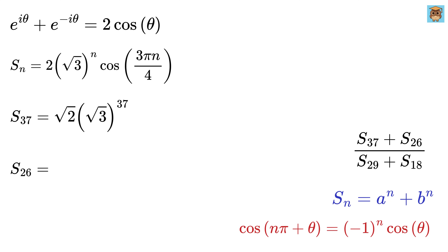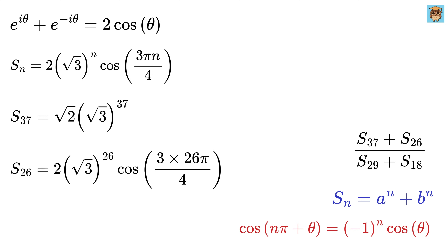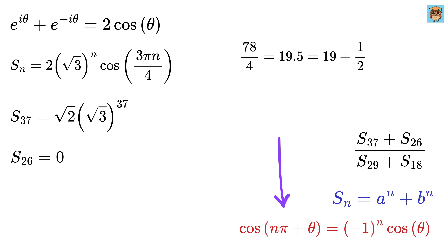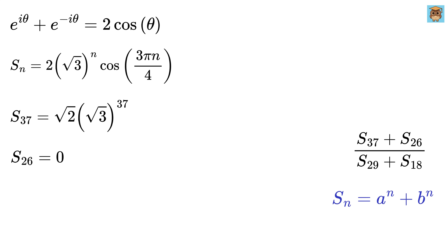Now let's compute s_26. It becomes 2 times root 3 raised to 26 times cos of 3 times 26 pi divided by 4, that is cos of 78 pi divided by 4. Since 78 divided by 4 is 19.5, which is 19 pi plus pi by 2, we get minus 1 raised to 19 times cos of pi by 2. This becomes super easy because cos of pi by 2 equals 0. So s_26 becomes 0. We can similarly find the value of s_29, which becomes root 2 times root 3 raised to 29, and the value of s_18 becomes 0.